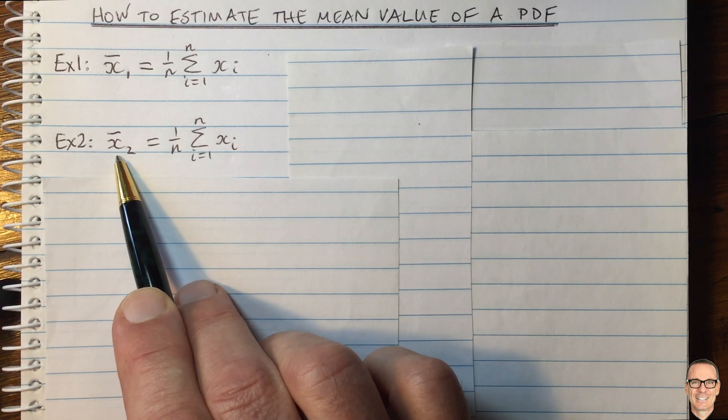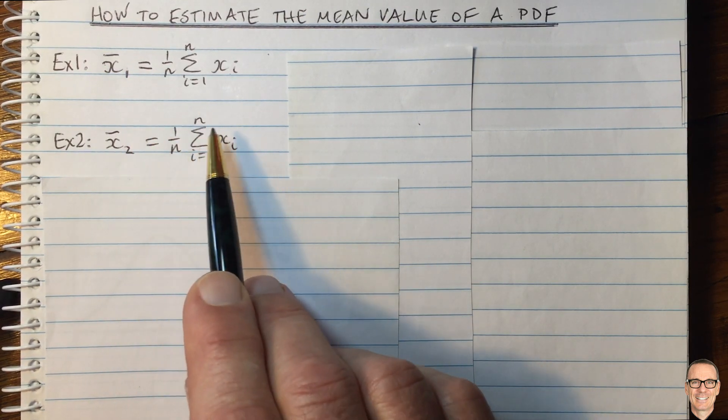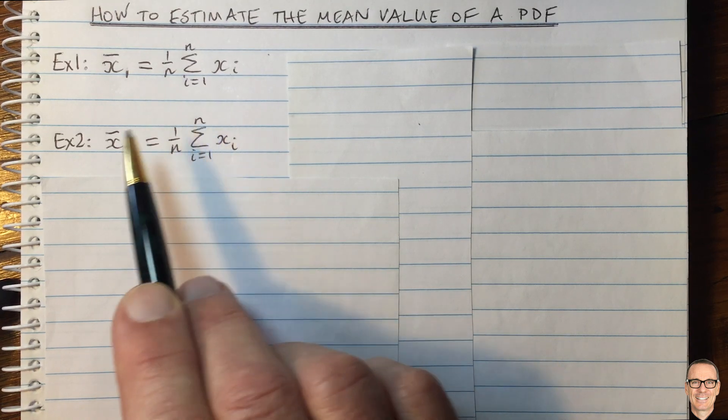So now we start to think, we'd like to know about the accuracy of these estimates. One thing we'd like to know is how big n should be, for example.